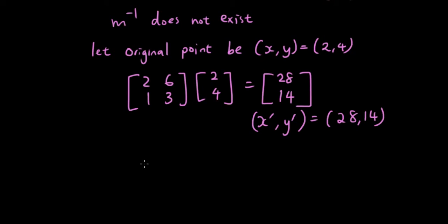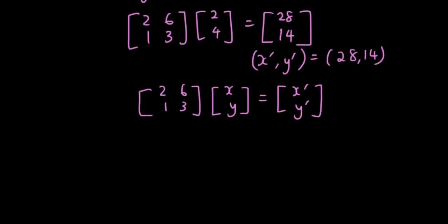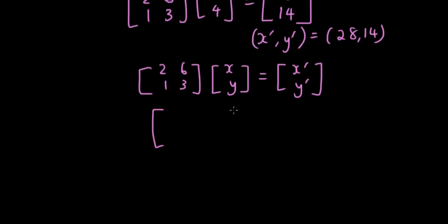Another thing we need to note is that we can come up with a general formula for the result of the transformation. So if you have a look at the transformation matrix multiplied by x and y, what happens is, if we simplify the left hand side, you get 2x plus 6y as the first row, and then 1x plus 3y in the second row.